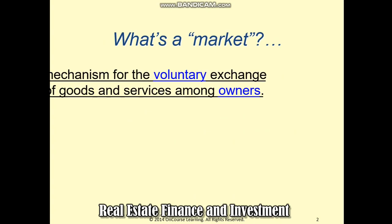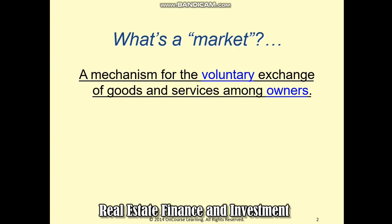A market is a mechanism for the voluntary exchange of goods and services among owners. In other words, a market is a meeting place of two or more players in order to exchange goods or services. In older systems people exchange goods with goods, or goods with services, whereas in our current system we have a medium of exchange which is money. For example, a house owner would want to find a suitable tenant for his house, and in exchange for the benefits of staying at the house, the tenant needs to pay monthly rental.